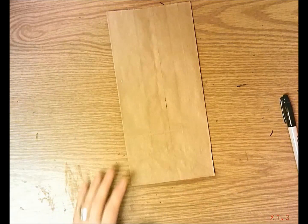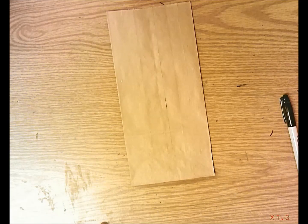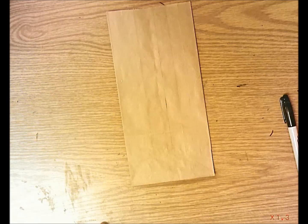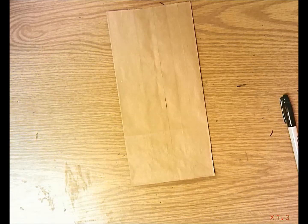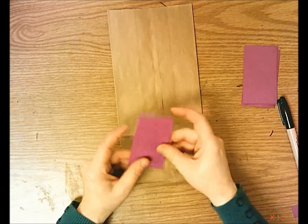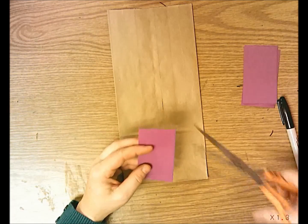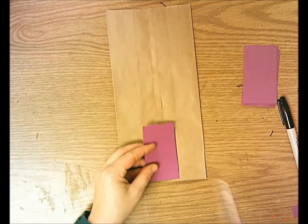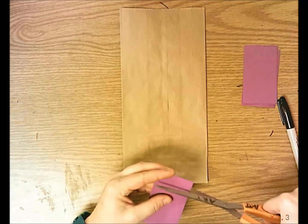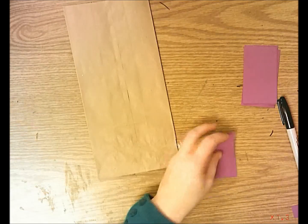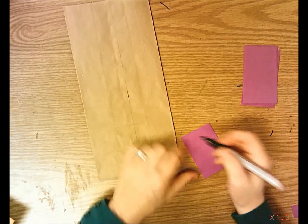You're going to add a door to the bottom. I have some scrap paper and you can choose whatever color door you'd like for your building. I'm going to pick this purplish magenta color. Cut it the size that you want. I like the width of this but it's maybe a little too tall.